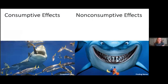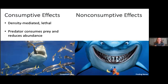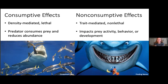We'll start with some general background about predators and the kinds of effects they can have on an ecosystem. There are two categories: the first being consumptive predator effects, and the second being non-consumptive predator effects. Consumptive effects — also referred to as density-mediated or lethal predator effects — is any instance where a predator is consuming prey and reducing the abundance of that prey. Non-consumptive predator effects, also called trait-mediated or non-lethal effects, is anything where a predator impacts a prey's activity, behavior, or development without actually consuming that prey.